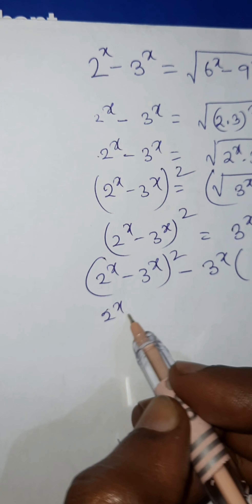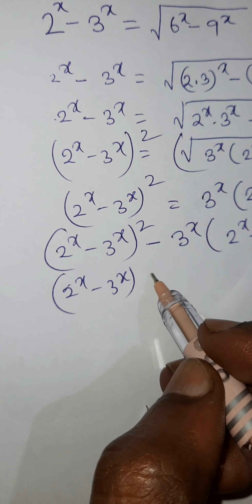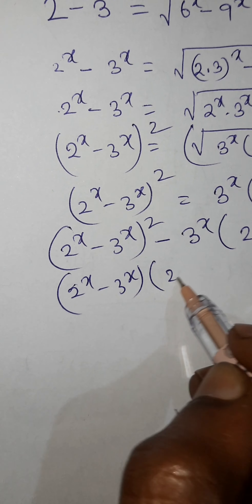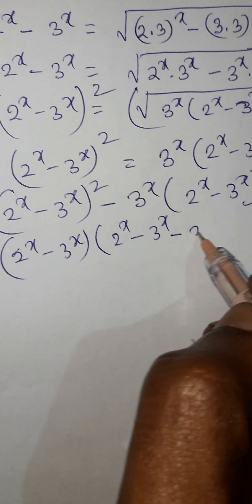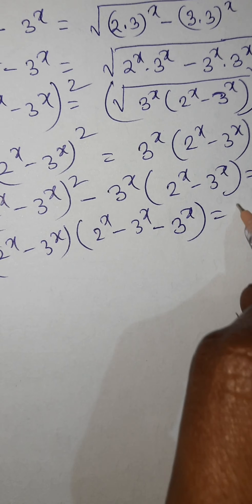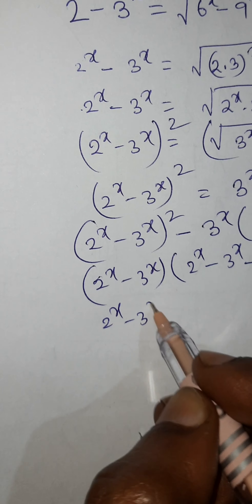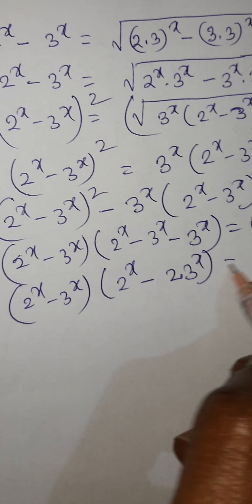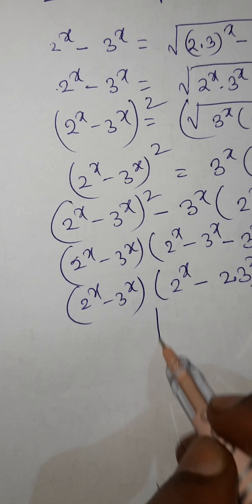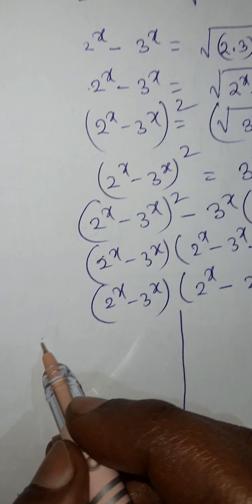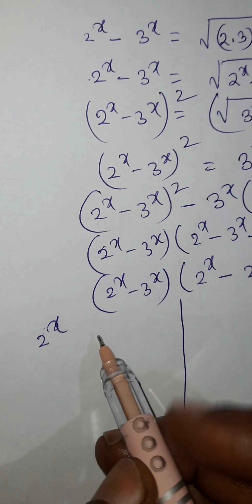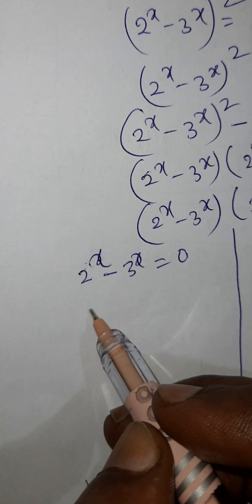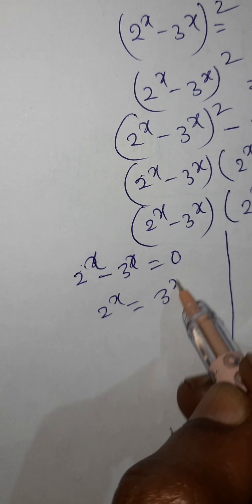Rearranging: (2 to the power x minus 3 to the power x) squared minus 3 to the power x times (2 to the power x minus 3 to the power x) equals 0. Here (2 to the power x minus 3 to the power x) is common, so factoring: (2 to the power x minus 3 to the power x) times (2 to the power x minus 2 times 3 to the power x) equals 0. This gives two conditions.